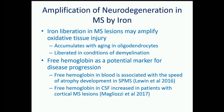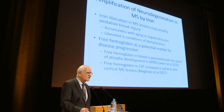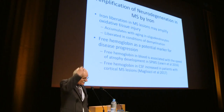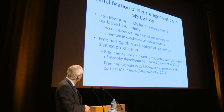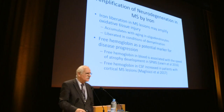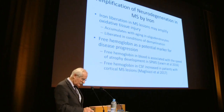Evidence from the simvastatin trial using proteomics found that free serum hemoglobin is associated with more rapid disease and atrophy development. A recent study by Magliozzi confirmed that free hemoglobin is increased in the cerebrospinal fluid in patients with high loads of cortical lesions compared to patients without cortical lesions.